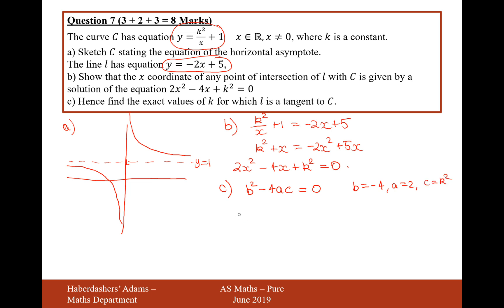So let's go ahead and substitute those in. It's going to be 16 minus 4 times 2 times k squared. Let's divide by 8 on both sides. It's going to be 2 minus k squared equals 0. So then 2 equals k squared. So therefore, k equals plus or minus root 2.